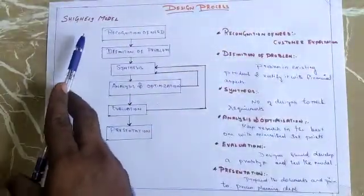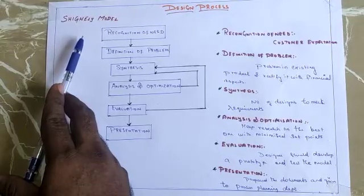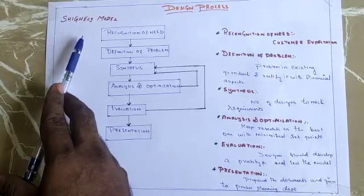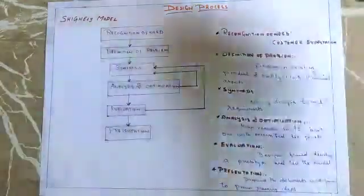Now I'm going to discuss this topic with an example of Pulsar or any other bike model. Here I will take a Pulsar bike model as an example. Look at this detail. Recognition of need.